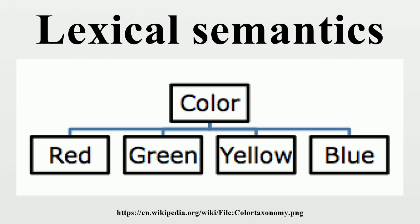Semantic fields: how lexical items map onto concepts, first proposed by Trier in the 1930s. Semantic fields theory proposes that a group of words with interrelated meanings can be categorized under a larger conceptual domain. This entire entity is thereby known as a semantic field. The words boil, bake, fry, and roast, for example, would fall under the larger semantic category of cooking.